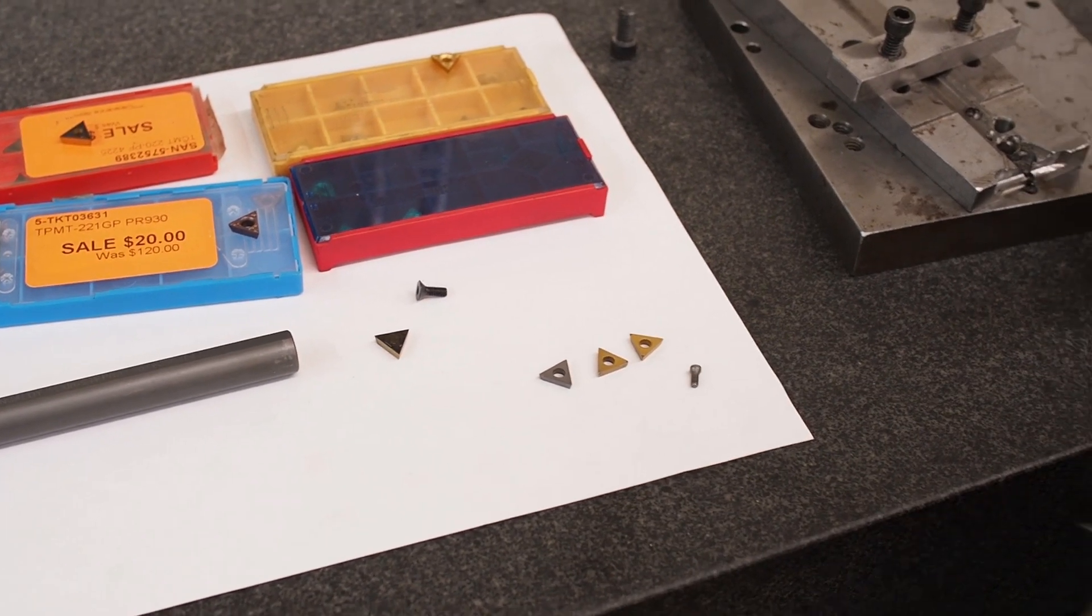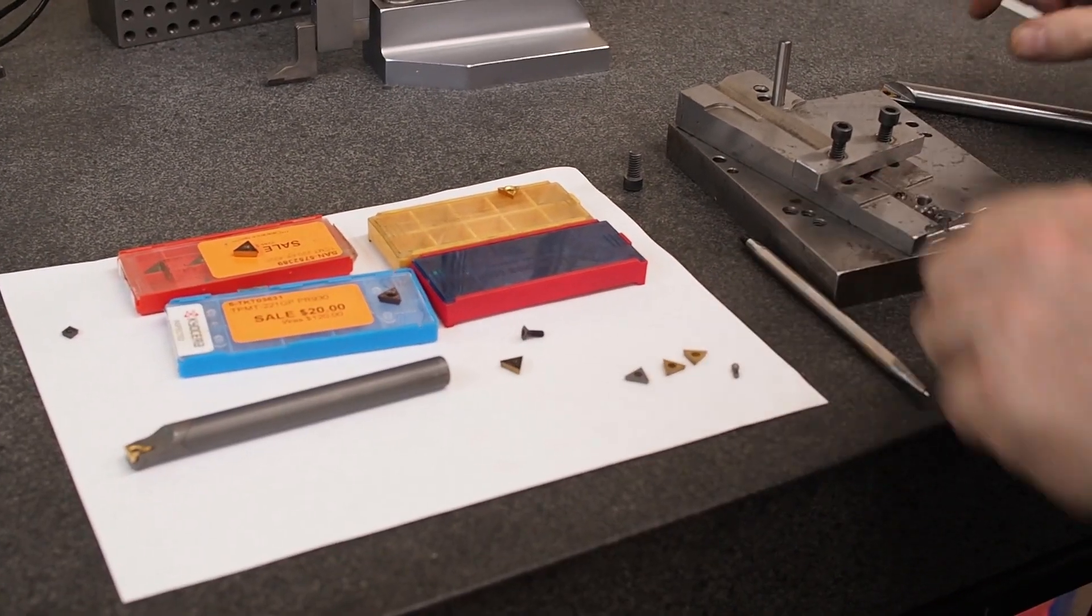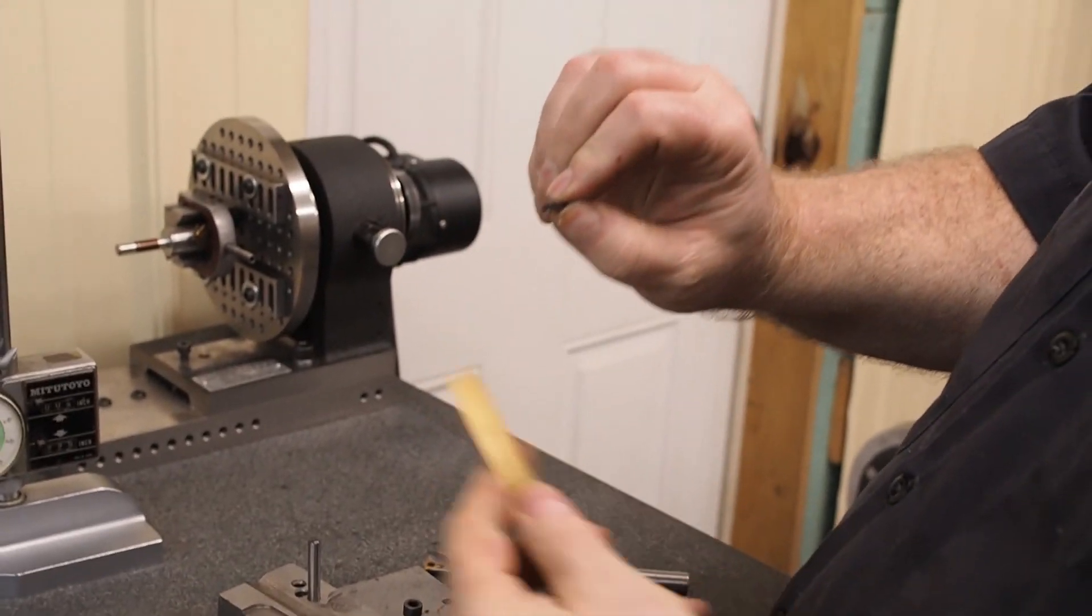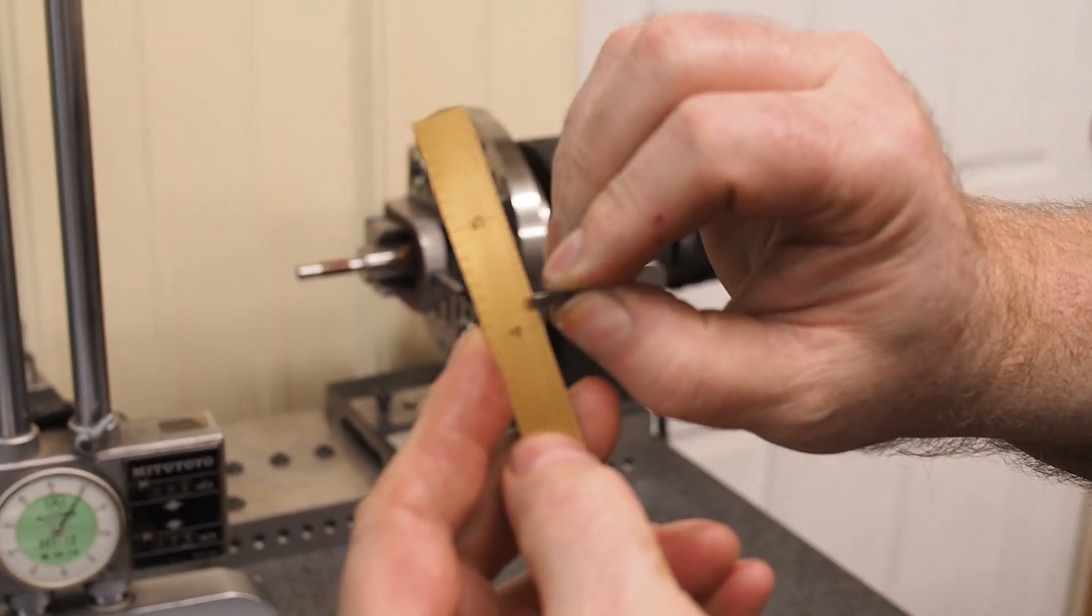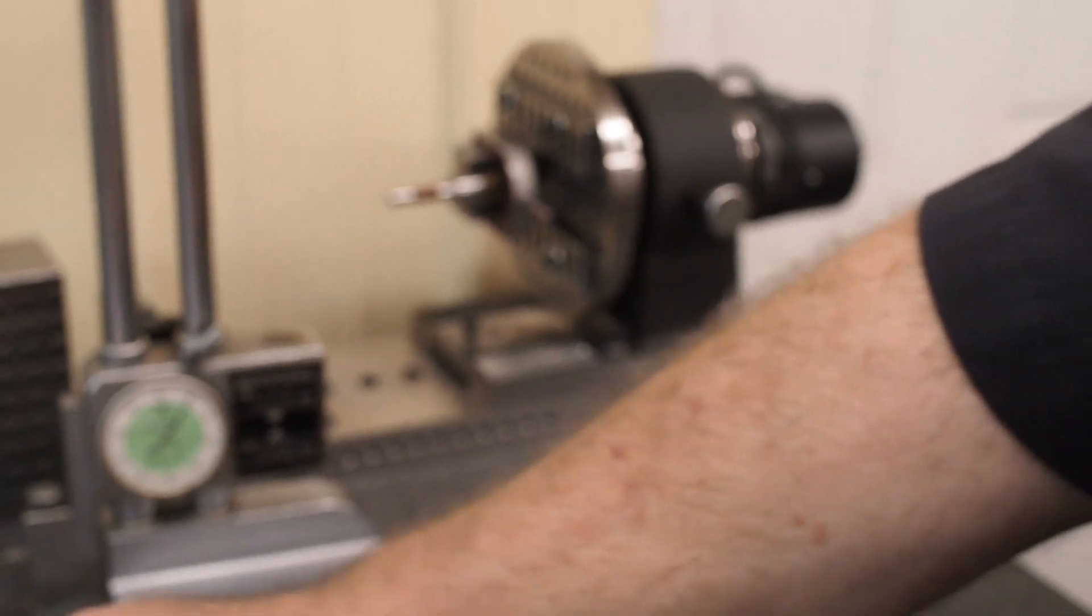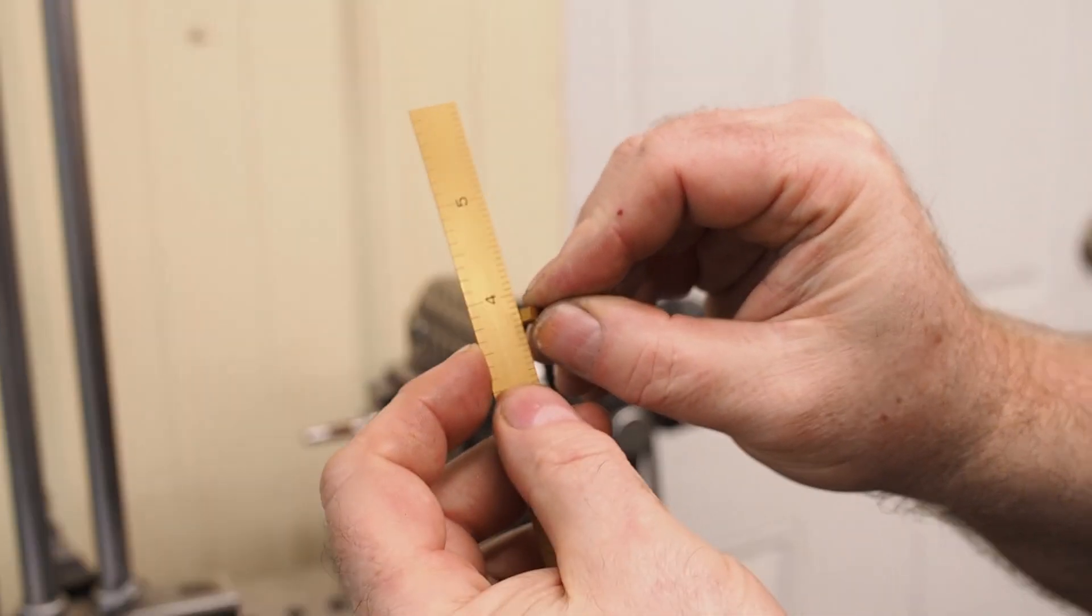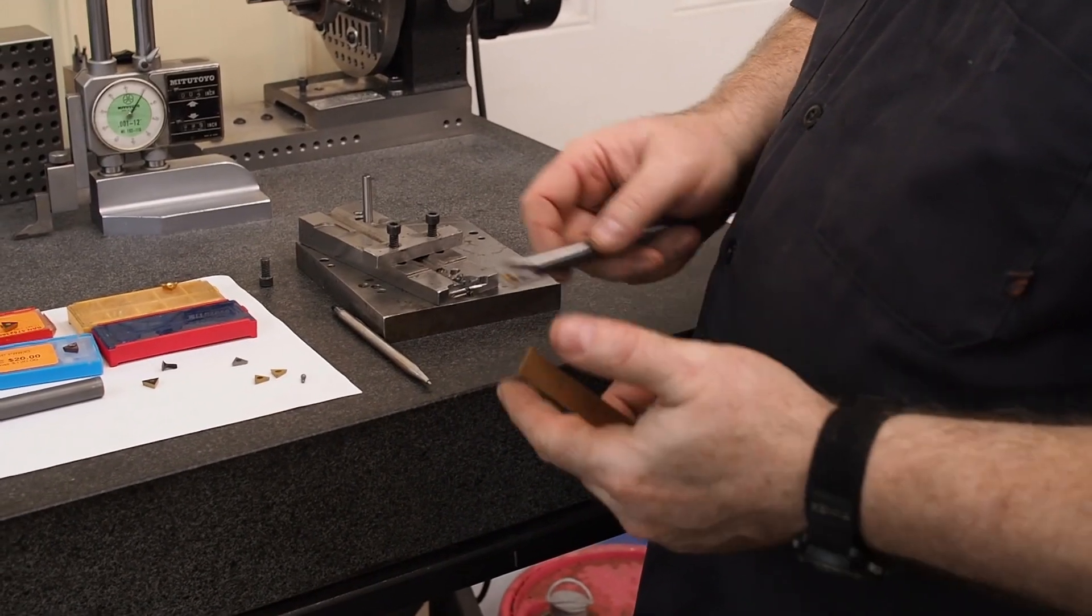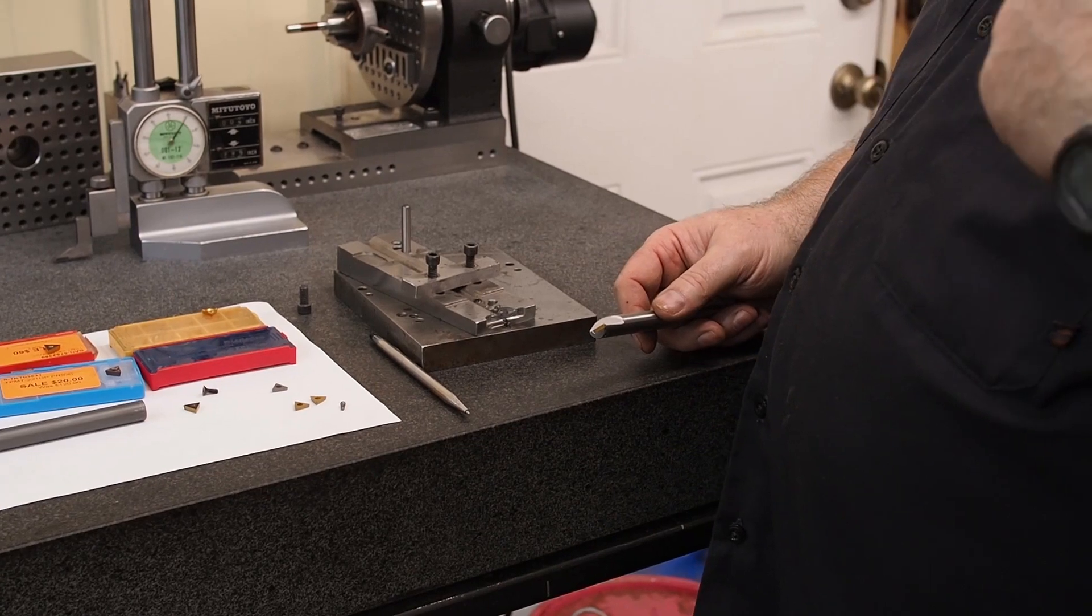Most of the inserts will have an 11 degree angle relief on there, but if you get some of them like I believe this is a Sandvik insert that's only a seven degree relief, and so you have to be careful because I do use a tapered end mill when I cut my tapered end mill. 11 degree, well you obviously can't use that and make a pocket for your seven degree inserts.